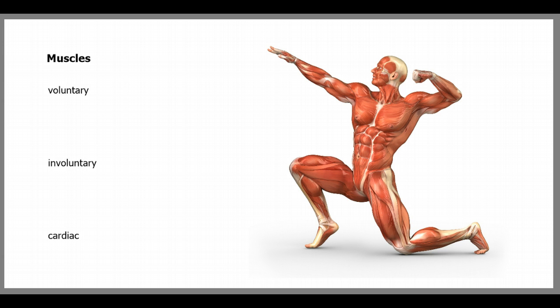There are three different types of muscles: voluntary, involuntary, and cardiac. Voluntary muscle, aka skeletal muscle, is consciously controlled to produce movement.